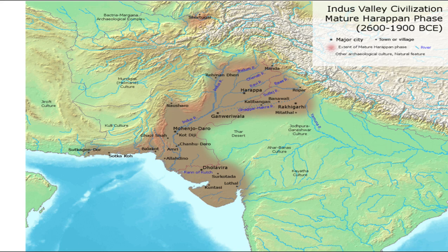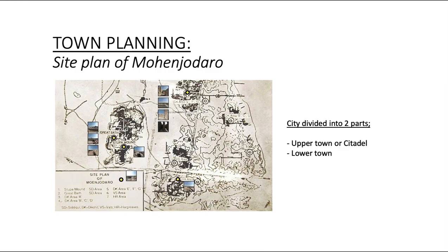The first site to be discovered was Harappa. When we look at town planning, we see through Mohenjo-daro as a case study. The city was divided into two parts: the upper town, also known as the citadel, and the lower town where multiple houses were located. The citadel was at higher ground — it was smaller but higher — constructed on mud brick platforms, walled, and physically separated from the lower town.